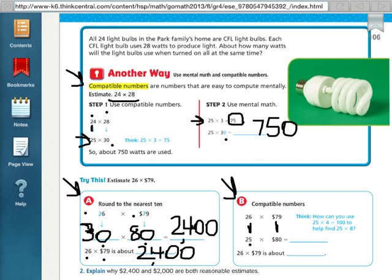So now I can think I have 25 times 8, or 8 quarters, which is equal to 200, and then add my zero for my 80, which is 2,000. So 26 times 79 is about $2,000.